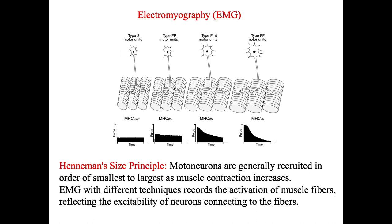Another technique is electromyography, EMG, which can also be used to record the response to TMS. The mechanism behind EMG is the size principle. The size principle means there are many motor neurons in the spinal cord, and these neurons can be recruited in order from the smallest to the largest size when the muscle is doing a contraction that is increased little by little. EMG with different techniques can record the activity of muscle fibers.